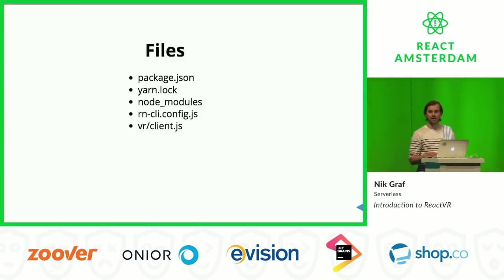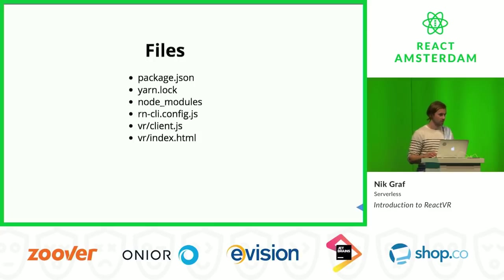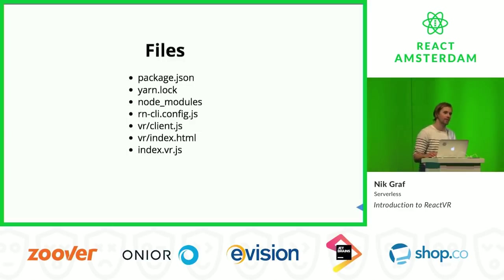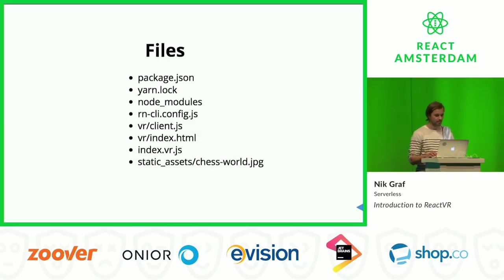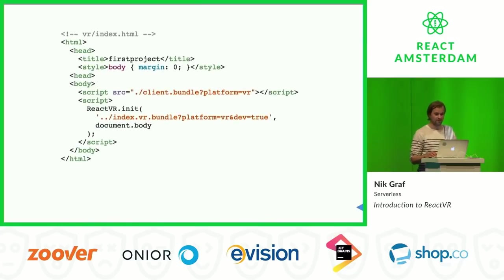Let's dig deeper. There's a directory called 'vr' and inside you have a client.js file, an index.html file — this goes back to it just being a web application — and then there's an index.vr.js file. This is the file where you actually make magic happen. And then there's a static assets directory and a chess world — that's the boilerplate you get to start with.